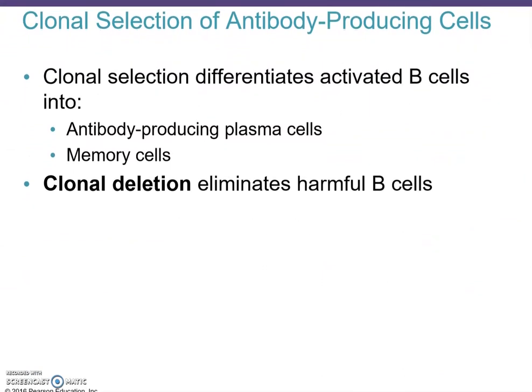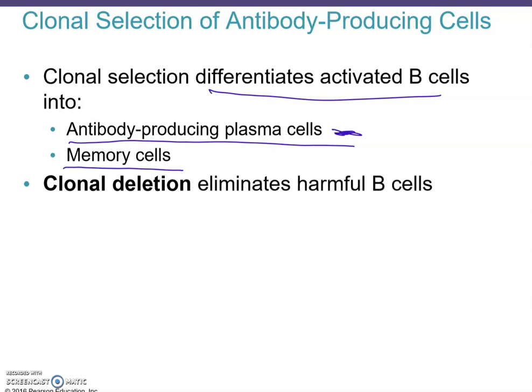Clonal selection of antibody-producing cells differentiates activated B cells into antibody-producing plasma cells. Once the infection or whatever caused the production of this antibody is done, we need to keep memory cells around — samples of the B cell clone that learned how to make a specific antibody. If we made a bad B cell that didn't work or was attacking the wrong thing, then we need to do clonal deletion, which eliminates any harmful B cells.